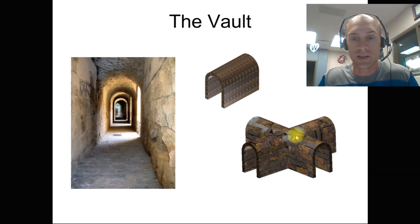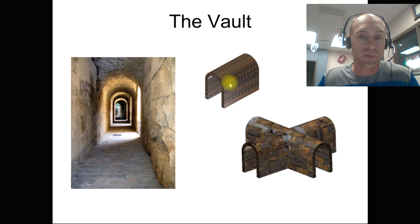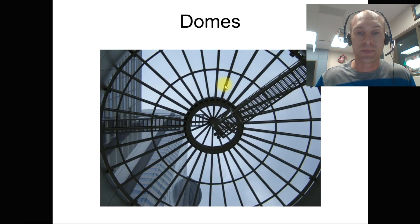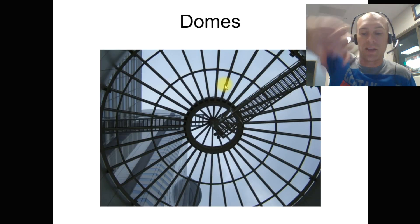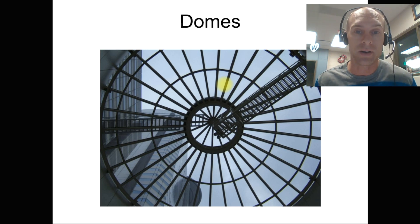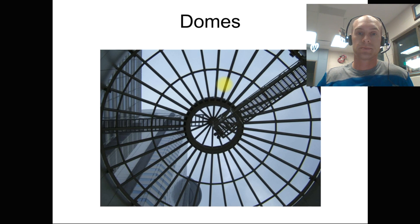A cross vault is where two arches intersect — the same principle applies, with weight on top spreading out to the sides and then going straight down. Domes are simply arches that have been rotated. Modern examples of domes include the Capitol building.